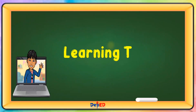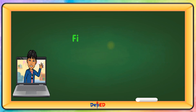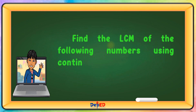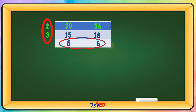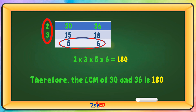Learning Task 3: Find the LCM of the following numbers using continuous division. We have 30 and 36. Using prime number 2: 30 divided by 2 is 15, 36 divided by 2 is 18. Using prime number 3: 15 divided by 3 equals 5, 18 divided by 3 equals 6. Multiply the prime numbers and remaining quotients: 2 times 3 times 5 times 6 equals 180. Therefore, the LCM of 30 and 36 is 180.